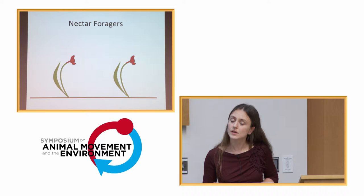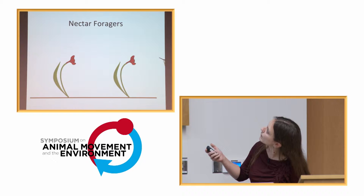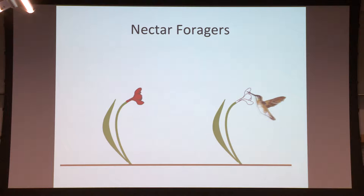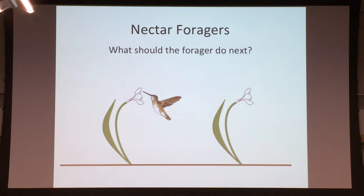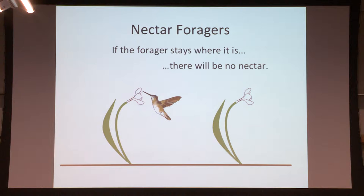What we have in mind is a series of flowers and something like a hummingbird. The nectar forager, which is also a pollinator, is going to go along and drain nectar out of the flowers. The question is what type of movement rule the forager should use in order to get the most nectar out of a particular landscape. If the forager just stays where it is, there's no nectar there — it's already just drained it all. That might save energy costs of motion, but it's not going to get anything for at least a little while.